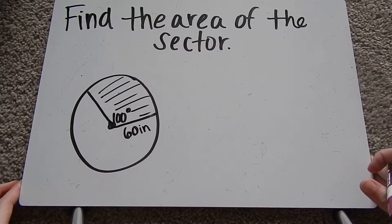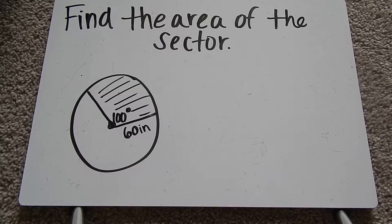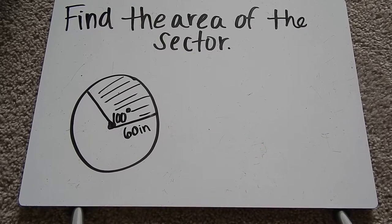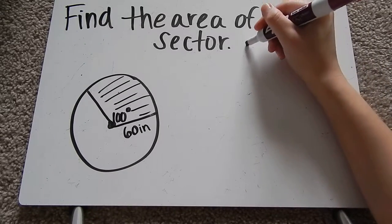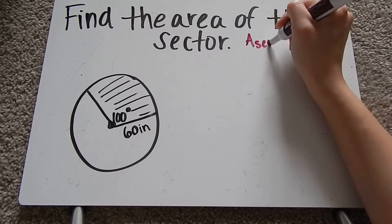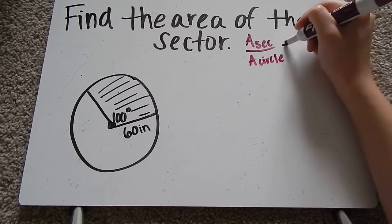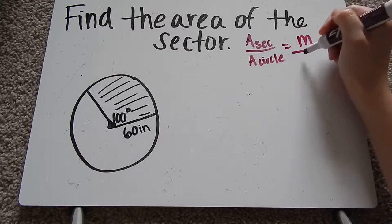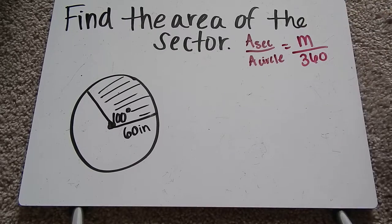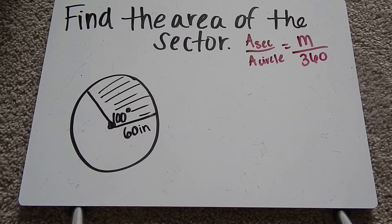Here's the first one. It says find the area of the sector. So I'm going to go ahead and write my formula. So we have area of the sector over area of the circle equals the central angle measure over 360. Plug in what we know and then we can solve for what we're missing.